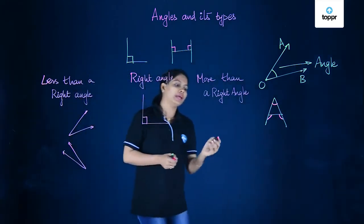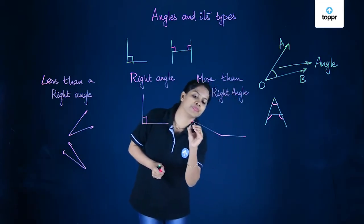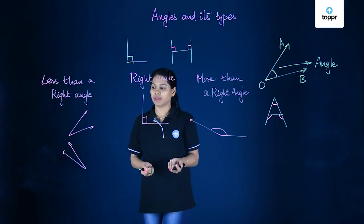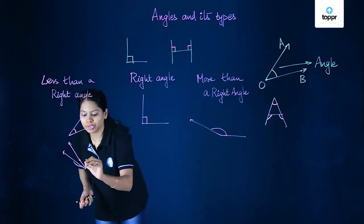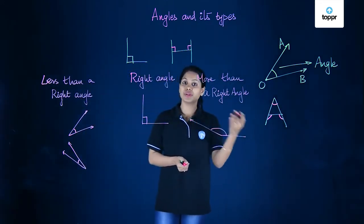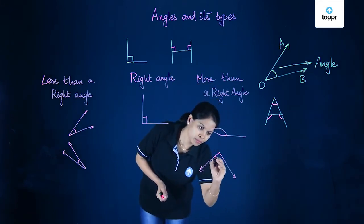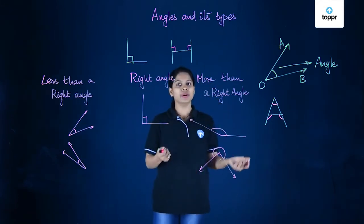But what about an angle that's like this? This angle here is greater than a right angle. So these angles are smaller than right angles, and this angle is greater than a right angle. Similarly, if I look at this here, this angle is greater than a right angle.